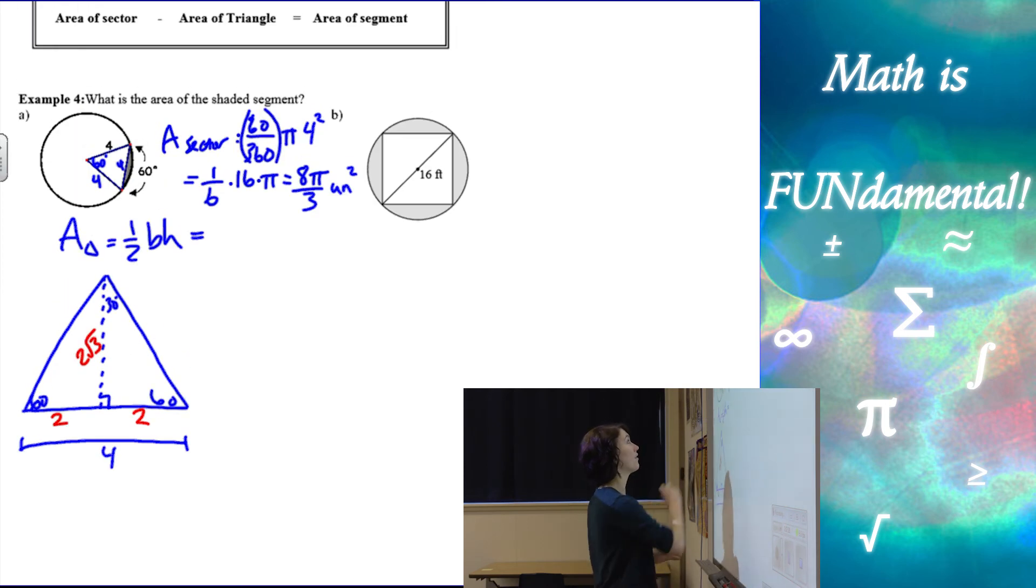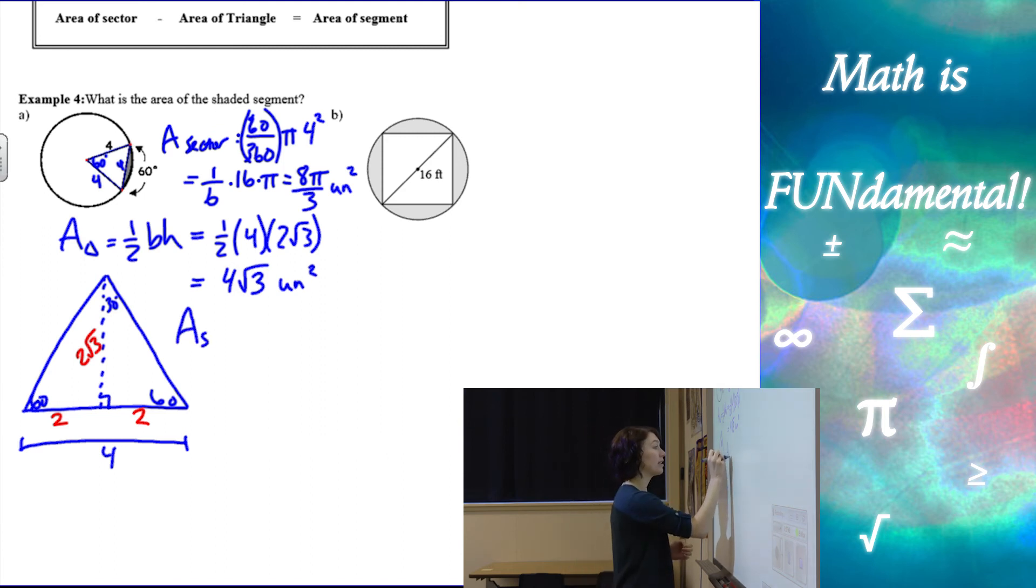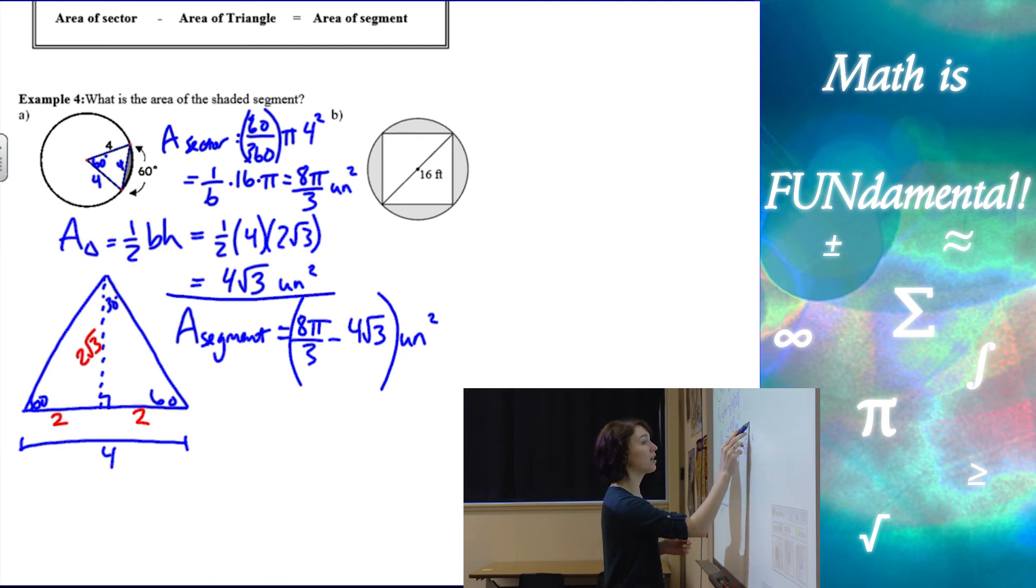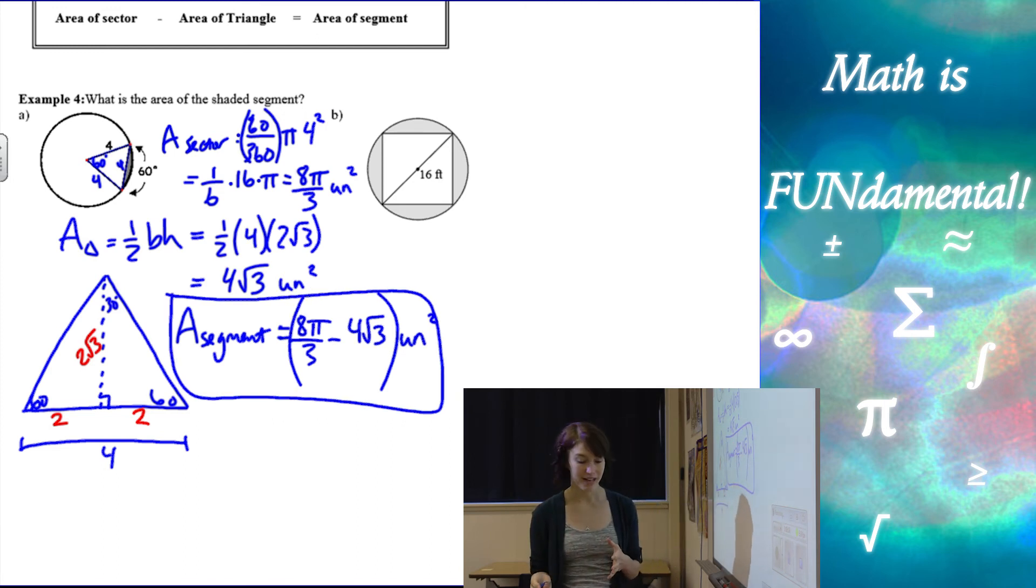So now my area of the triangle is going to be 1 half 4 times 2 root 3. And that is going to simplify to 4 root 3 units squared. So now the area of my segment, the piece that's shaded on my diagram, is going to be the area of the whole sector, which was 8 pi over 3, minus the area of the triangle, which was 4 root 3, and then units squared. So kind of a complicated looking answer there, but we got to our answer.